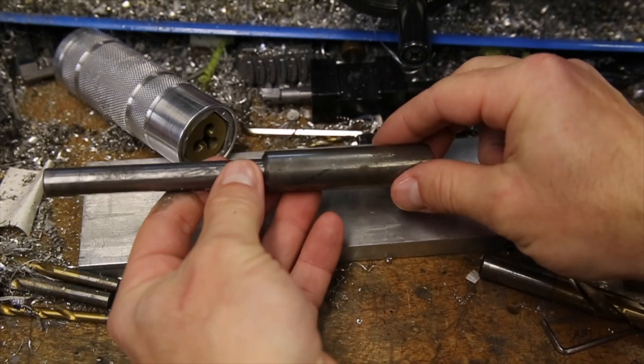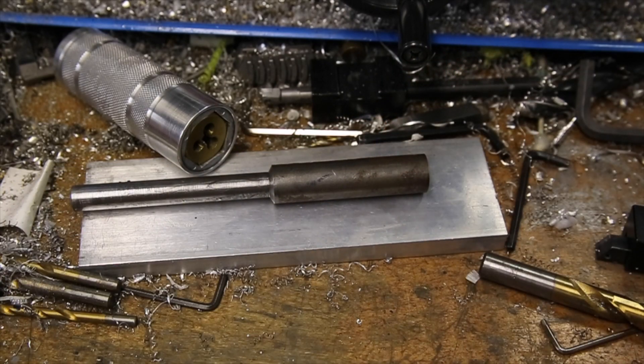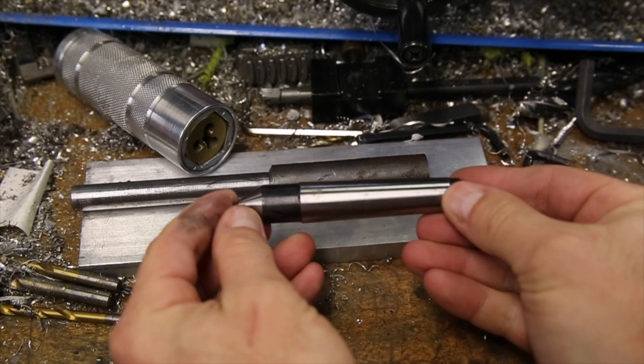Hey everyone, this is a quick tutorial on one method of how to turn an MT2 size morse taper out of mild steel on the mini lathe.